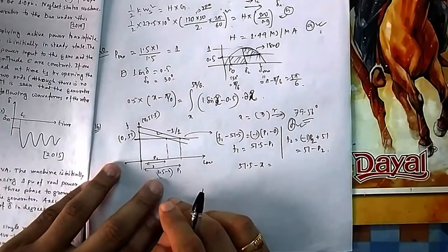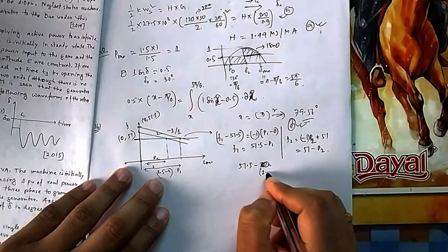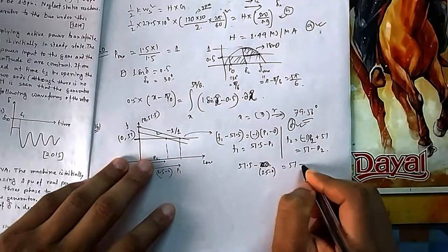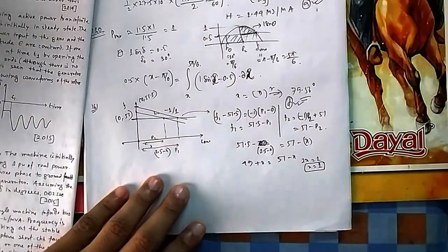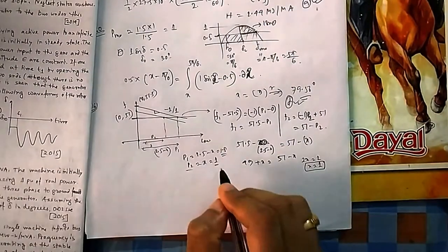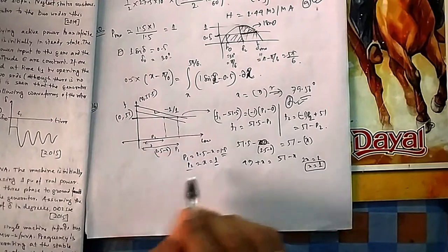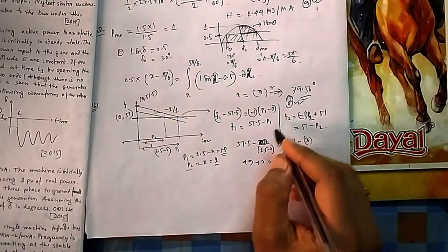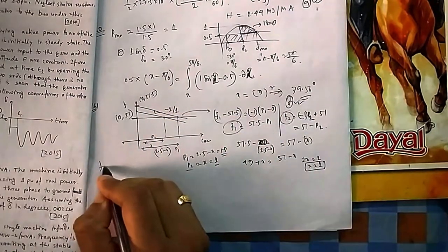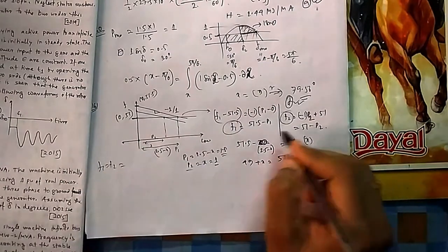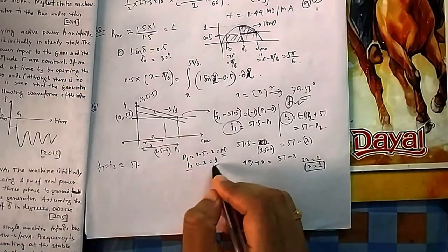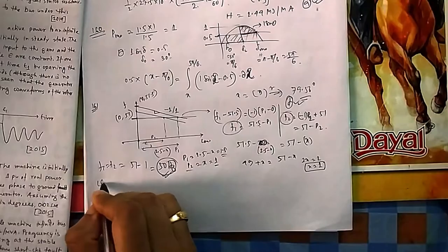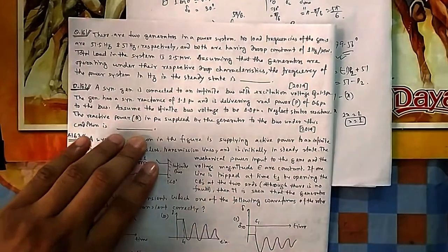Solving: 51.5 − x = 51 − 2.5 + x gives x = 1, so p1 = 1.5 and p2 = 1. Substituting p2 = 1 into f2 = 51 − p2 gives f = 50 Hz. The system frequency maintained is 50 Hz.